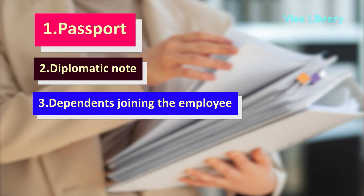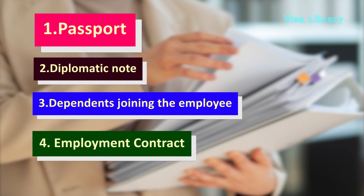Third, information about any dependents joining the employee in the U.S. is needed, including names, relationships, and dates of birth. Fourth is an employment contract signed by both employee and employer, which must include a description of duties, hours of work, minimum wage, overtime, transportation to and from the U.S., and terms of employment. The U.S. embassy may ask for additional supporting documents depending on your case and nationality.